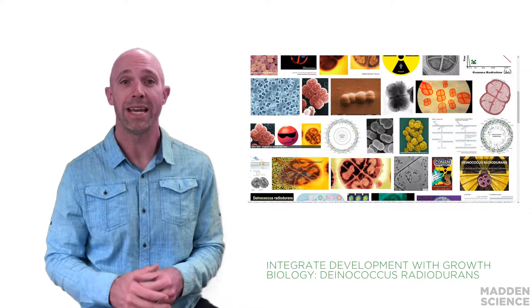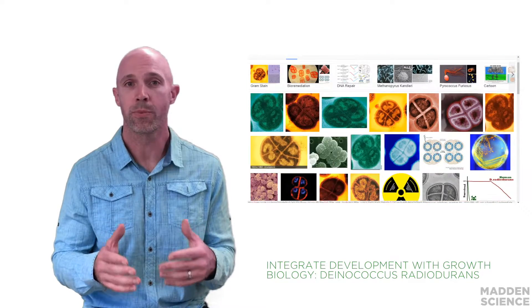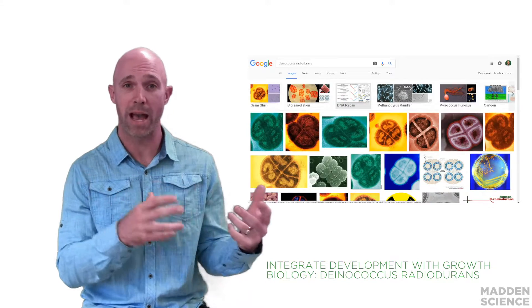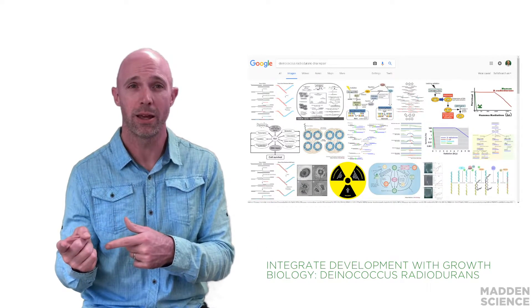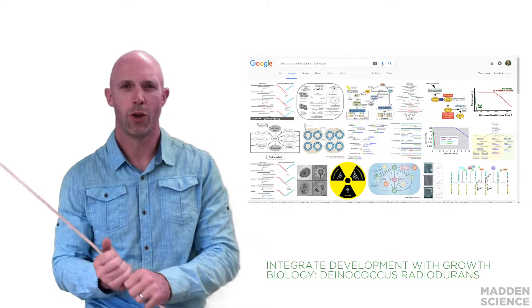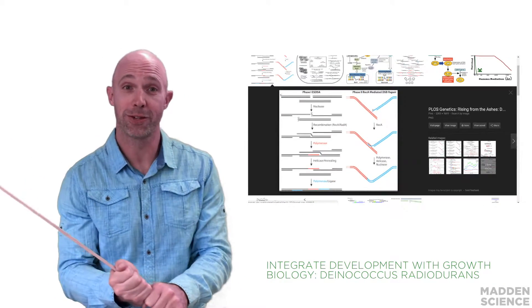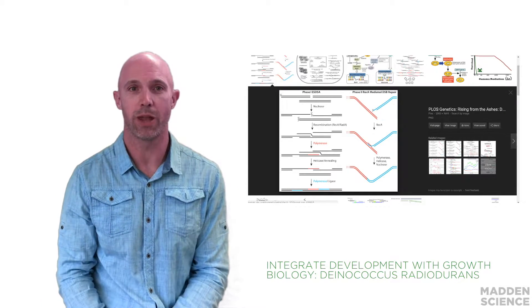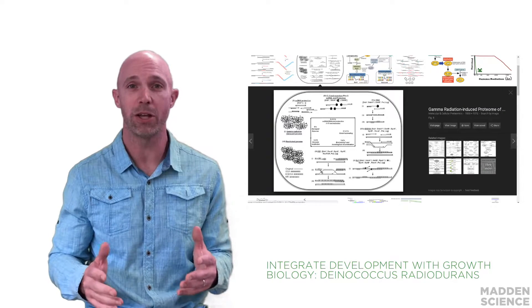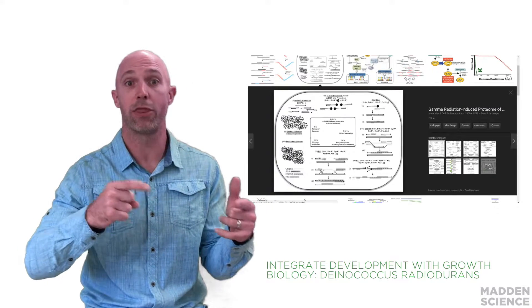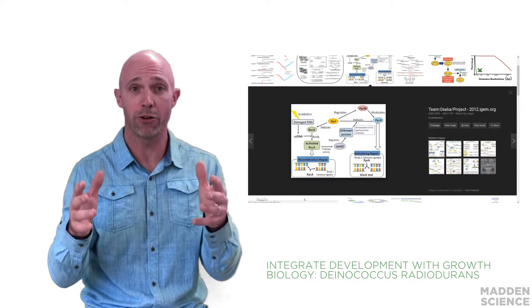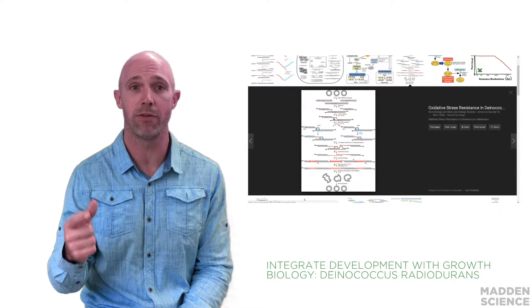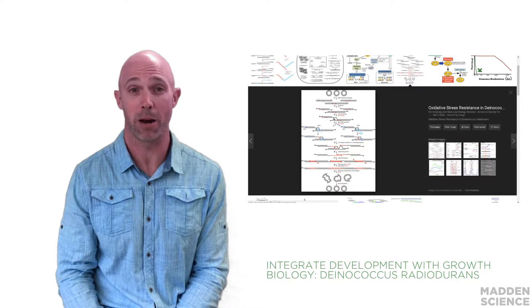Deinococcus radiodurans integrates development and growth in the same way it is able to take on these extreme conditions: bounce back after onslaught, repair its DNA, and then continue growing. It can withstand 500 rads of radiation without missing a beat, and upwards of 1.5 million rads and still operate at 37% viability — whereas 500 rads can kill a human. Deinococcus radiodurans is able to continue its development and growth via a heightened DNA repair mechanism.